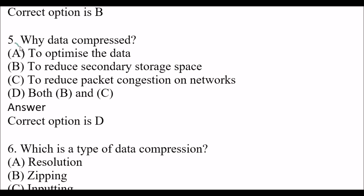Next question: Why is data compressed? Option A: to optimize the data. Option B: to reduce secondary storage space. Option C: to reduce packet congestion on networks. Option D: both B and C. This is very important. The first reason is to reduce secondary storage space, and the second reason is to reduce packet congestion on networks. So the right answer is option D, both B and C.